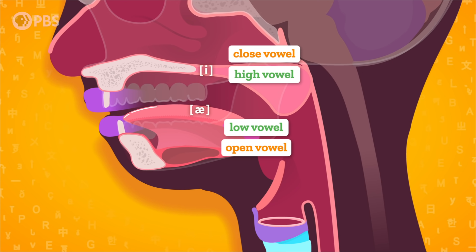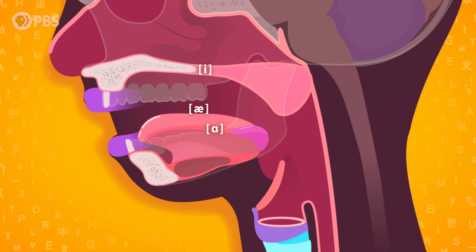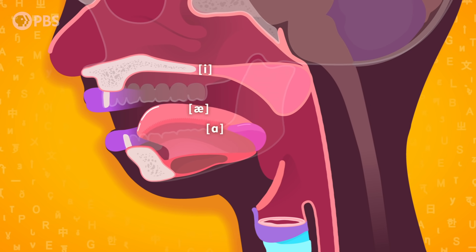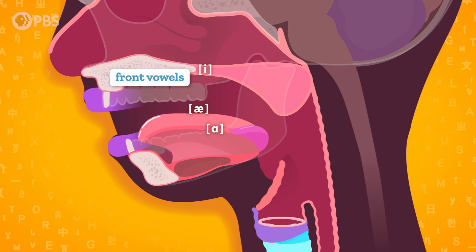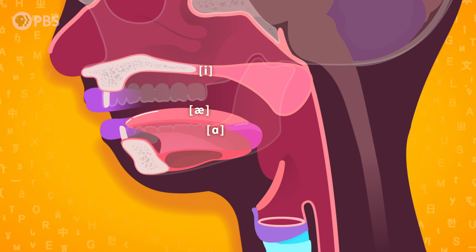High and close mean the same thing, as do low and open. Let's try moving from AH to something like a full, open-mouth doctor-checking-your-tonsils AH. Your tongue stays low, but it moves further back in your mouth. EEEE and AH are front vowels, while this new AH is a back vowel. We now have two features: how high your tongue is and how far back your tongue is.